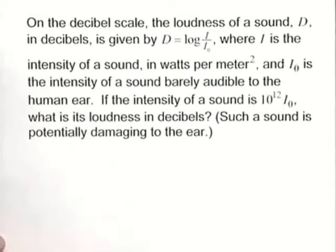Where i is the intensity of a sound in watts per meter squared, and i sub zero is the intensity of a sound barely audible to the human ear. If the intensity of a sound is 10 to the 12th power times i sub zero, what is the loudness in decibels? Such a sound is potentially damaging to the ear.